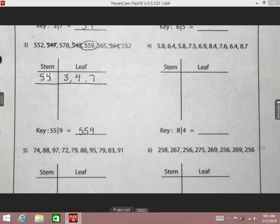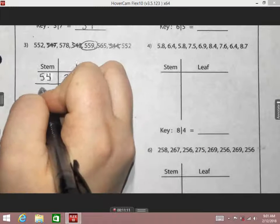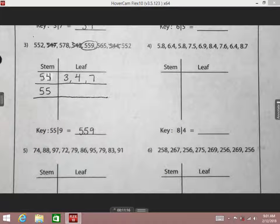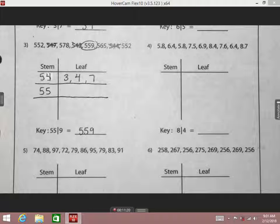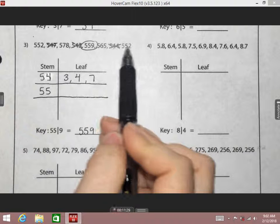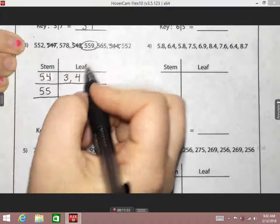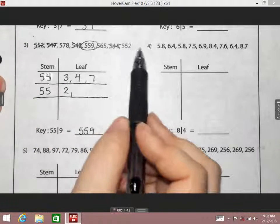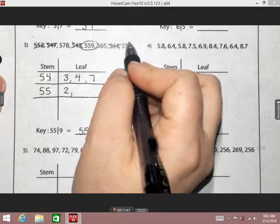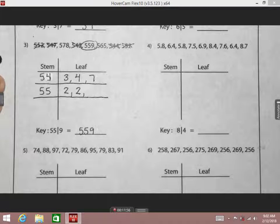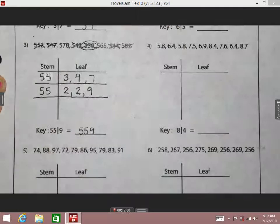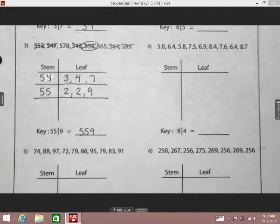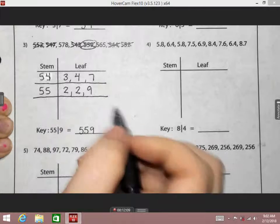What's going to be next? What's my next stem? 55. What leaf do I need to go with 55? Can you give me a leaf for 55? What's the smallest number next to 55 in this list? 2. So I'm going to put a 2. What's another small number to go with 55? We got another 552, so I'm going to put another 2. What's another leaf to go with 55? 9. Are there any other 55s? We have 552, 552, 559.